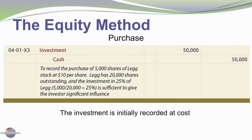Here we're going to have a $50,000 investment. We're going to debit investment and credit cash $50,000. This is to record the purchase of 5,000 shares of LEG stock at $10 per share. LEG has a total of 20,000 shares outstanding, so this 5,000 share purchase represents a 25% ownership, and we're going to deem that it is sufficient to exercise significant influence.